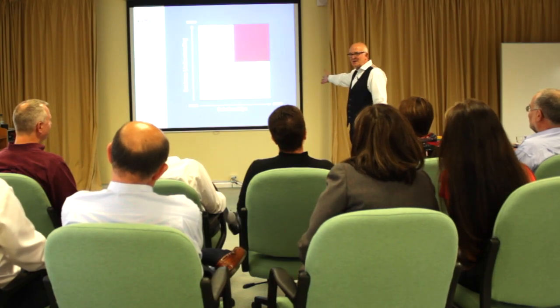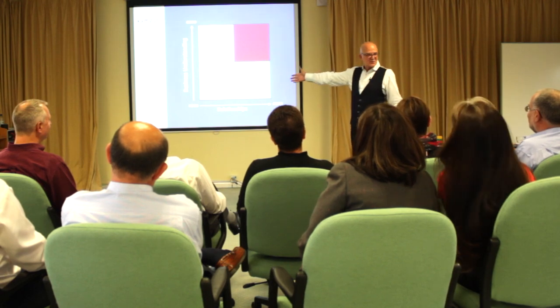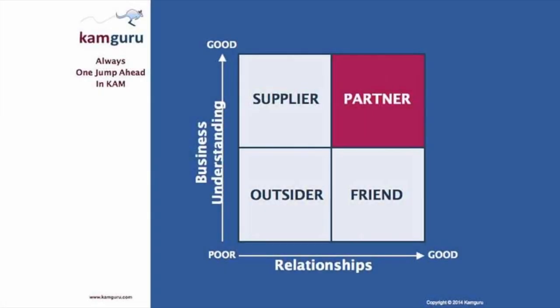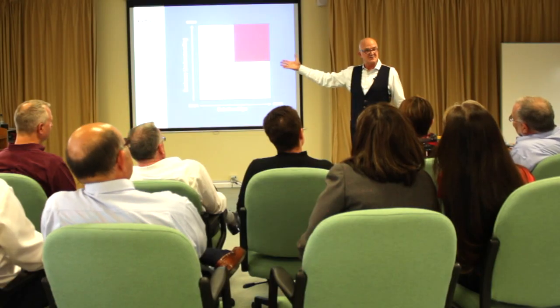On this four-square matrix, we have the ability of your sales team to develop relationships with their most important customers running along the bottom, and running up the side we have the ability of your sales team to really understand the customer's business in a lot of detail.